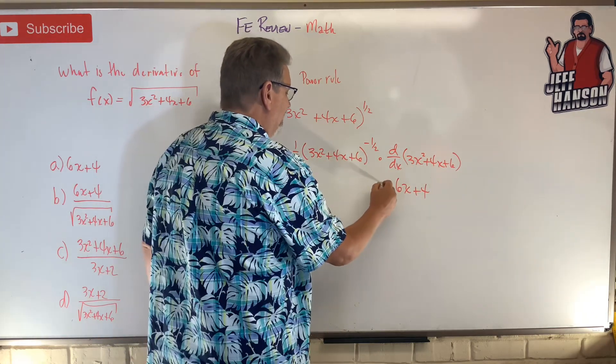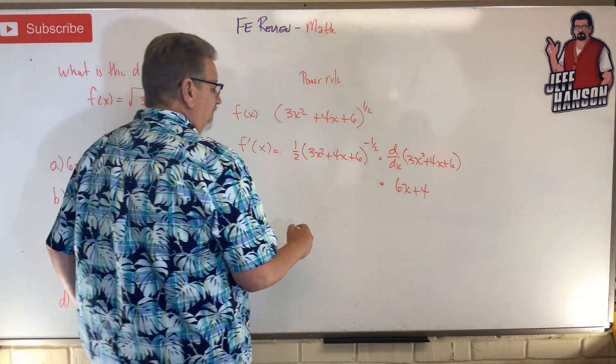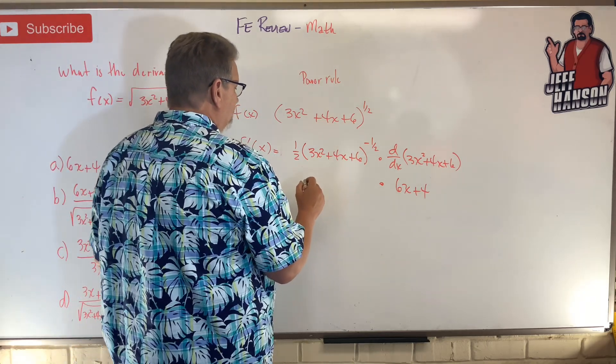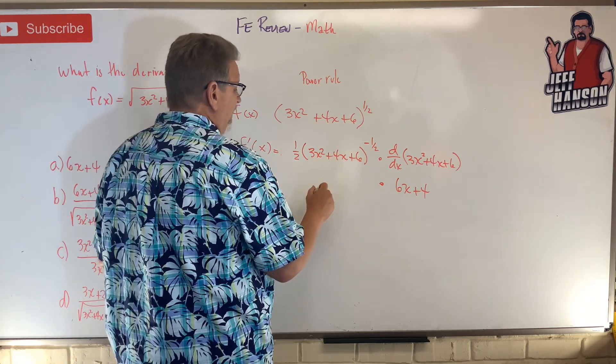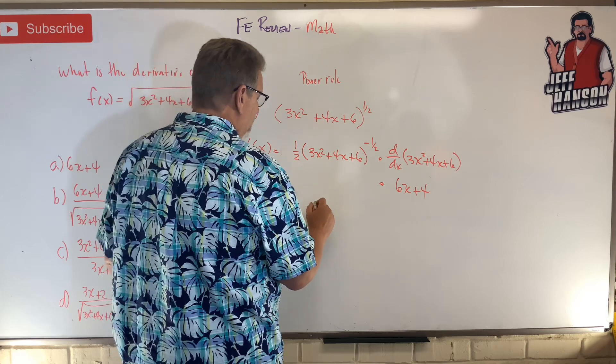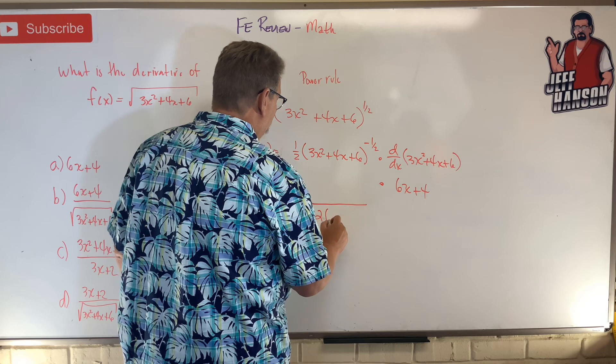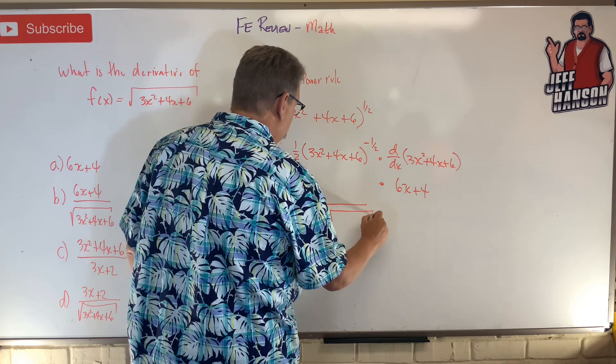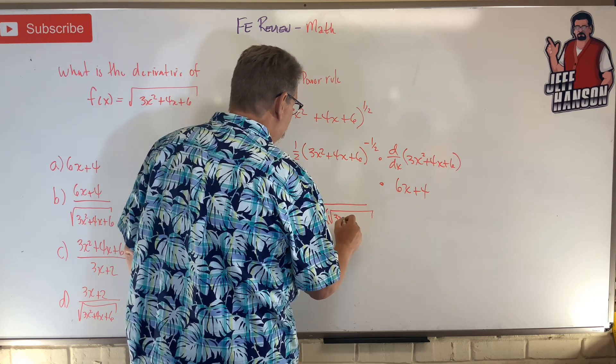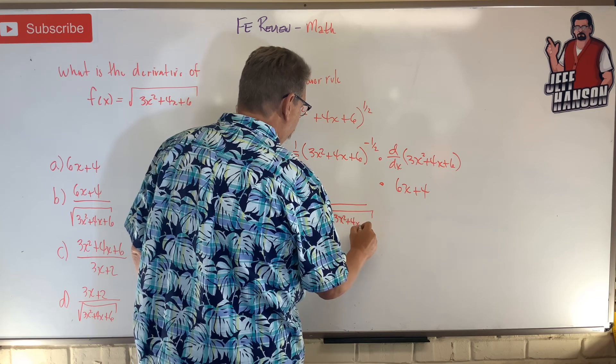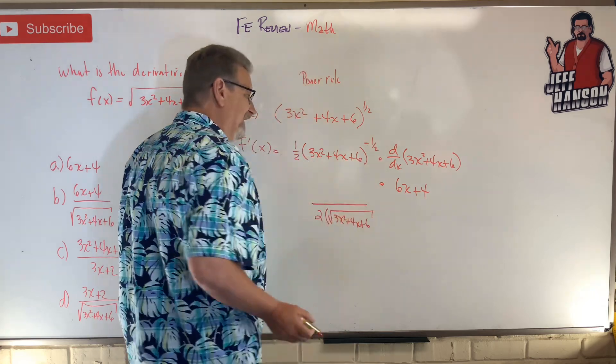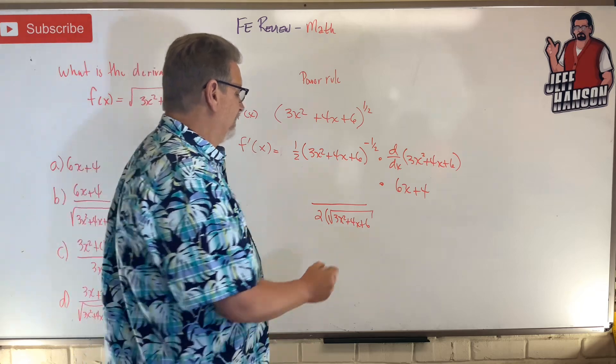So what I'm going to do is the negative 1/2, what does that mean? That means I have this: a 2 times the square root of 3x squared plus 4x plus 6. The 1/2 means it's a square root, the negative means put it in the denominator.